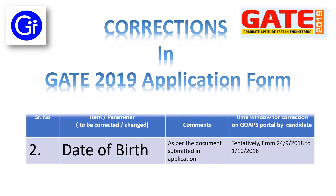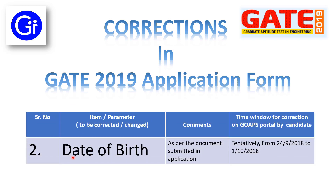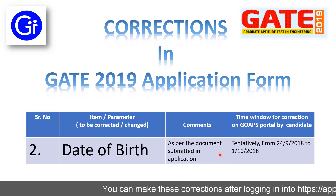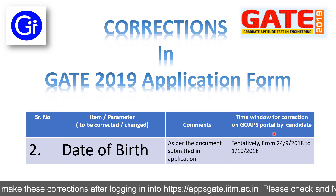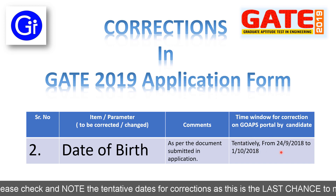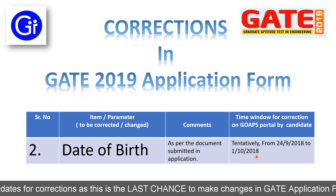The second parameter to be corrected or changed is date of birth. This can be done as per the document submitted in the GATE application form — documents like your eligibility certificate bearing your date of birth on it. So as per that certificate or document, you can make corrections in your date of birth. The time window for correction on the GOPS portal by the candidate is tentatively from 24th September to 1st October.